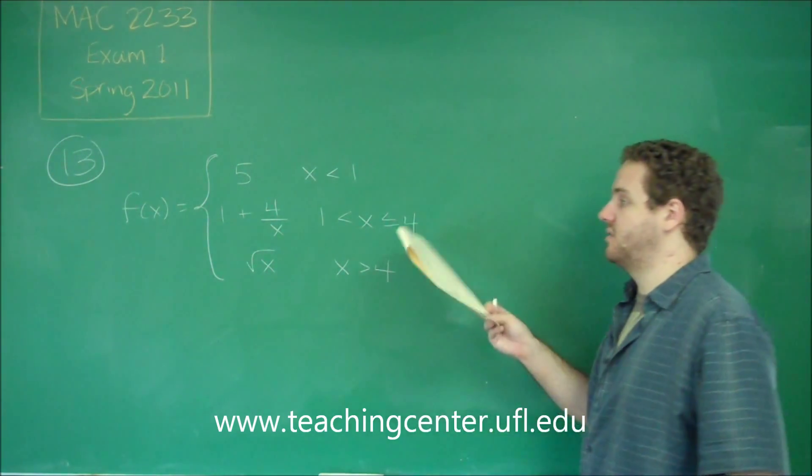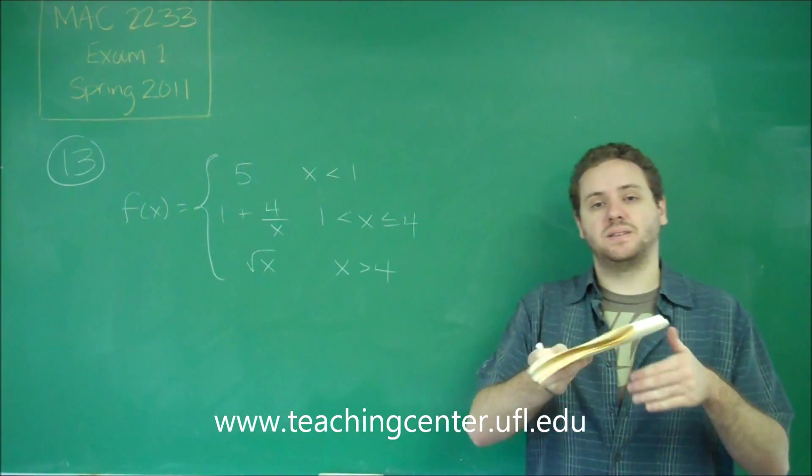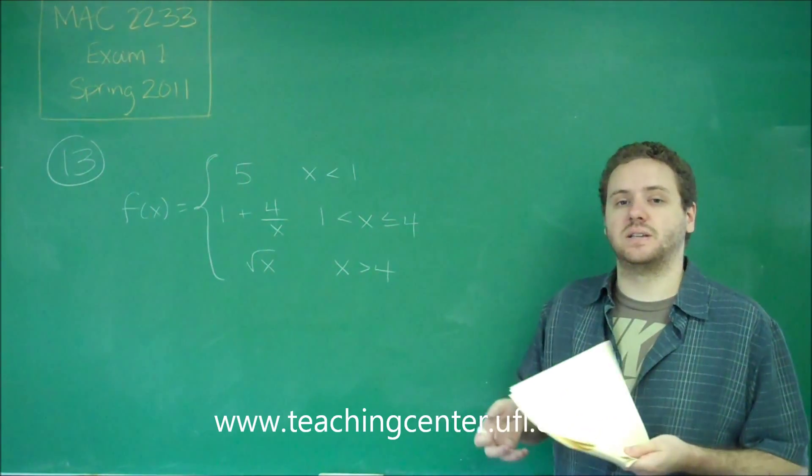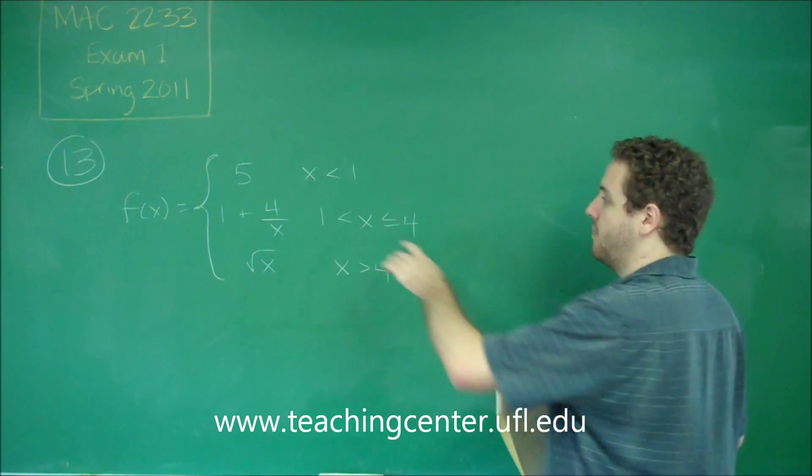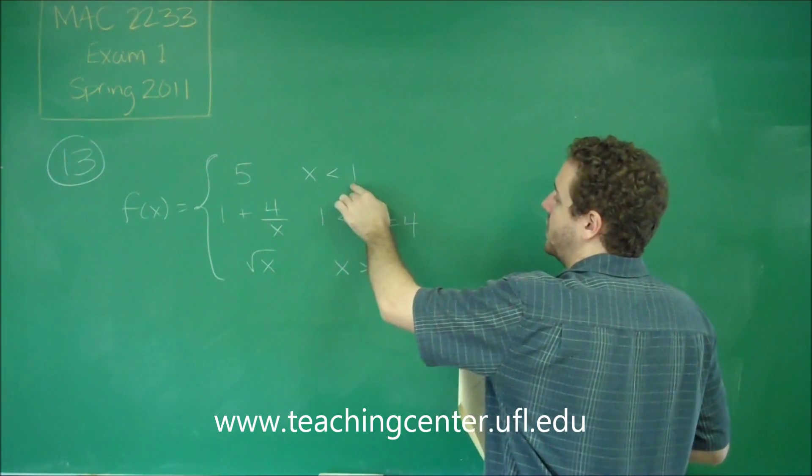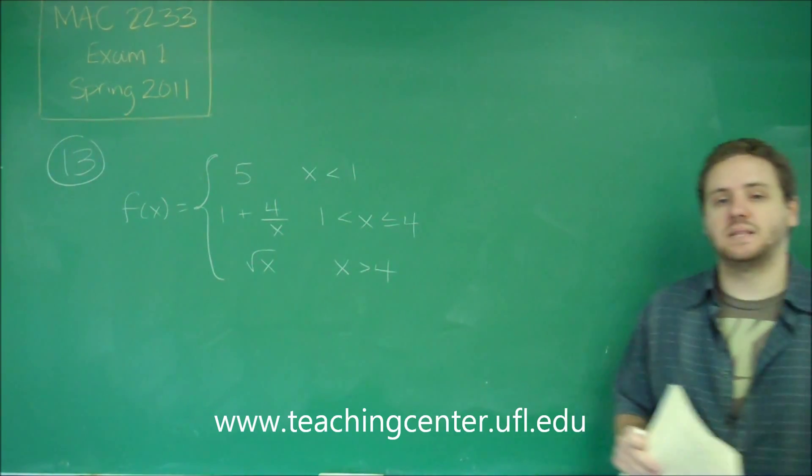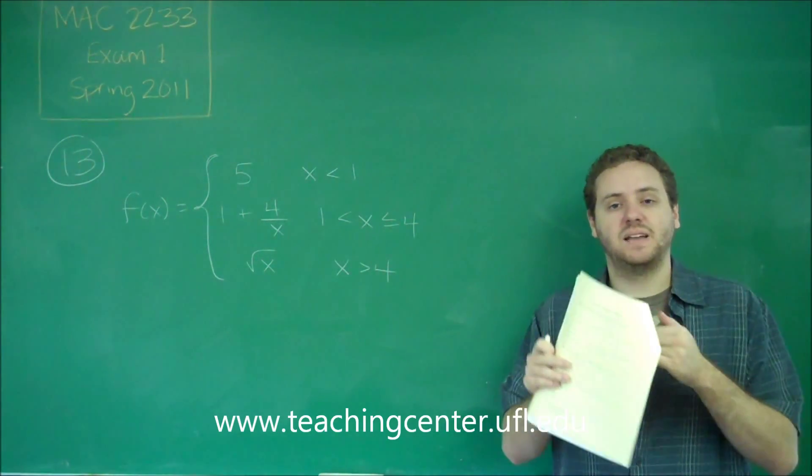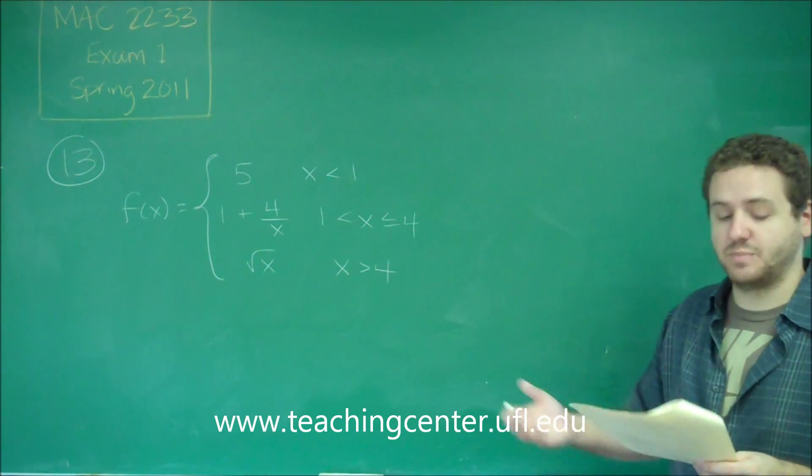Or in a case of a piecewise function, it could be when two pieces meet up at the same value, but they don't actually have that value. You can see we have that possibility here because this function goes up to 1, this function comes from 1, but neither of them have an equal sign, which means that that endpoint, if they had the same y value, would be an open circle and that would be a hole. So that's possible.